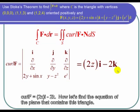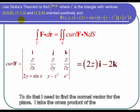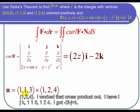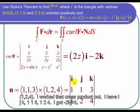So now let's find the equation of the plane that contains this triangle. And to do that, I need to find the normal vector for the plane. So I take the cross product of the first displacement vector, which is (1, 1, 3), and the second displacement vector, which is (1, 2, 4).